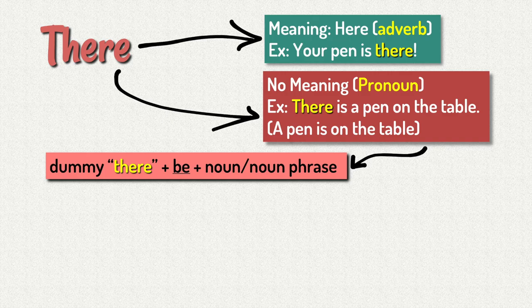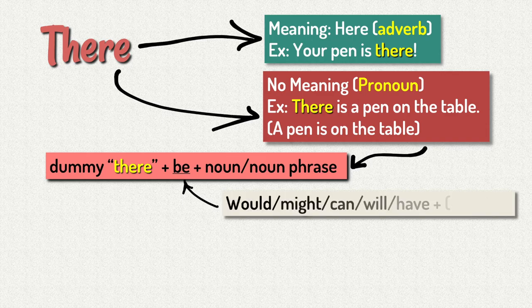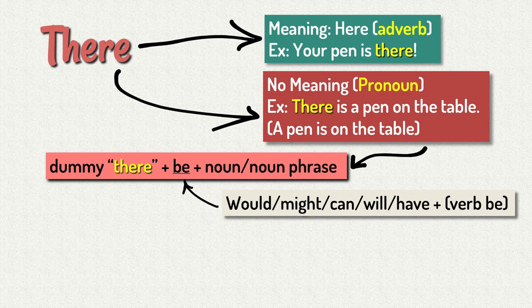Dummy there needs the verb to be, plus a noun or a noun phrase. It can also be used with would, might, can, will, have, plus the verb to be.